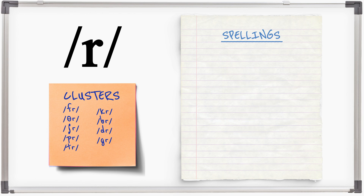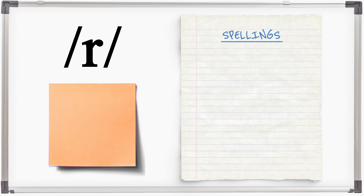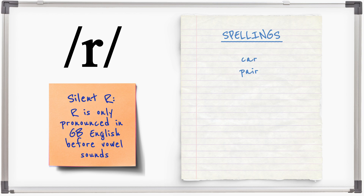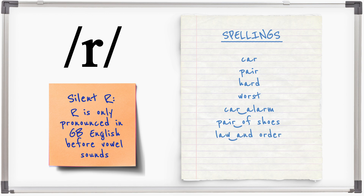R is silent in GB English when it is not followed by a vowel sound: car, pear, hard, worst. This same rule applies in connected speech: car alarm, pair of shoes. And occasionally, R is pronounced in connected speech where it is not written — for example, 'law and order', 'China exports' — which is known as intrusive R.